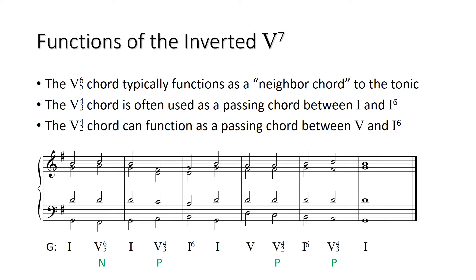So here are some of the typical functions of the inverted V7. You can see in the first measure here, the V6/5 acting as a neighbor chord to the tonic. And in the second measure, you can see the V4/3 acting as a passing chord between I and I6.